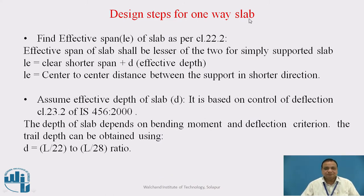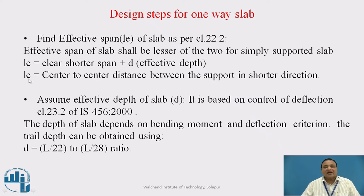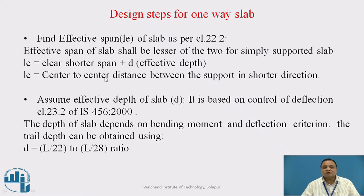The design steps for one-way slab: First, we have to find out the effective span L-E of the slab as per clause 22.2 of IS456-2000. Effective span of the slab shall be the lesser of the two for simply supported slabs: either L-E equals the clear shorter span plus small d (effective depth), or L-E equals the center-to-center distance between the supports in the shorter direction — that is, the clear span in shorter direction plus width of support. Whichever is smaller, that is taken as the effective span.